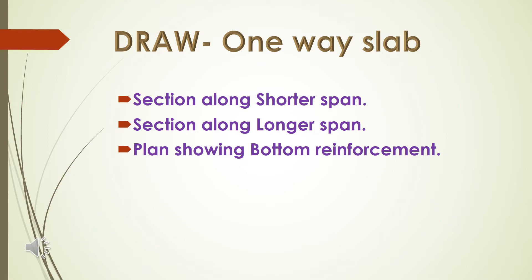What do we draw? First, we draw the section along the shorter span. Second, we develop the plan showing bottom reinforcement. The sections are: first, section along shorter span; second, section along longer span, where the long side is cut. Third, the plan showing bottom reinforcement. These are the three drawings for the one-way slab.